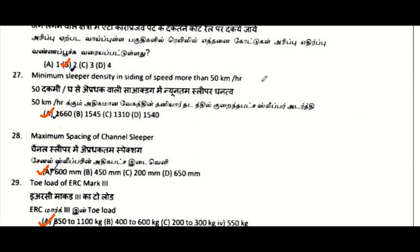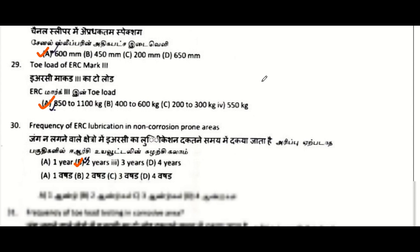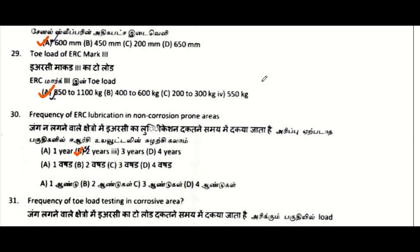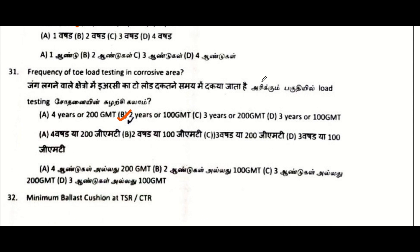How many coats of anti-corrosion paint are painted on rail in areas prone to corrosion: two coats. Minimum sleeper density in siding at speed more than 50 kmph: 1660. Maximum spacing of channel sleeper: 600 mm. Toe load of ERC Mark 3: 850 to 1100 kg.